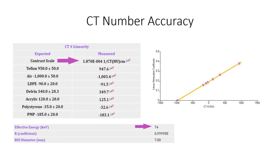For CT number accuracy, the average CT means for the reference materials are reported and a linear least squares regression is evaluated for the mean CT number and linear attenuation coefficients over a range of energies. The energy with the linear attenuation coefficients with the best correlation is selected as the effective beam energy, and the slope is reported as the contrast scale.